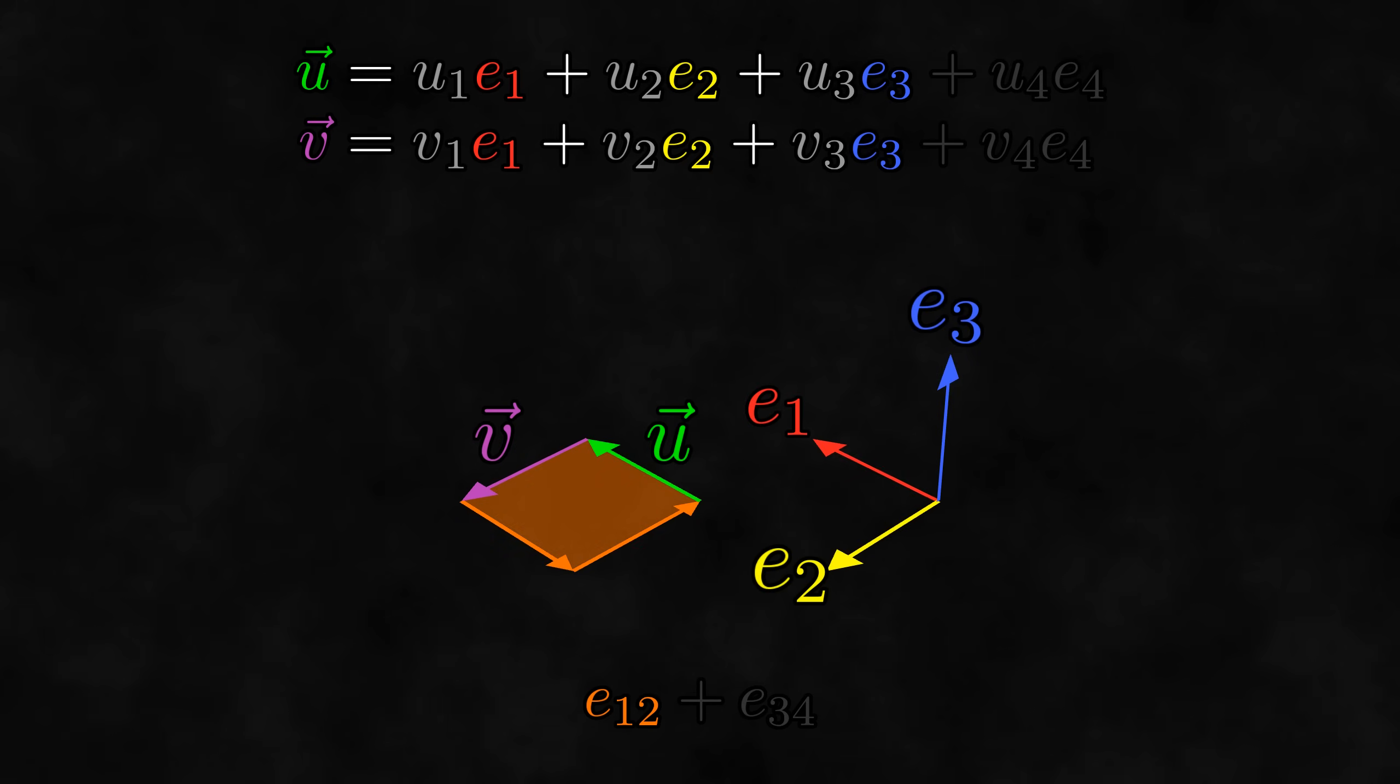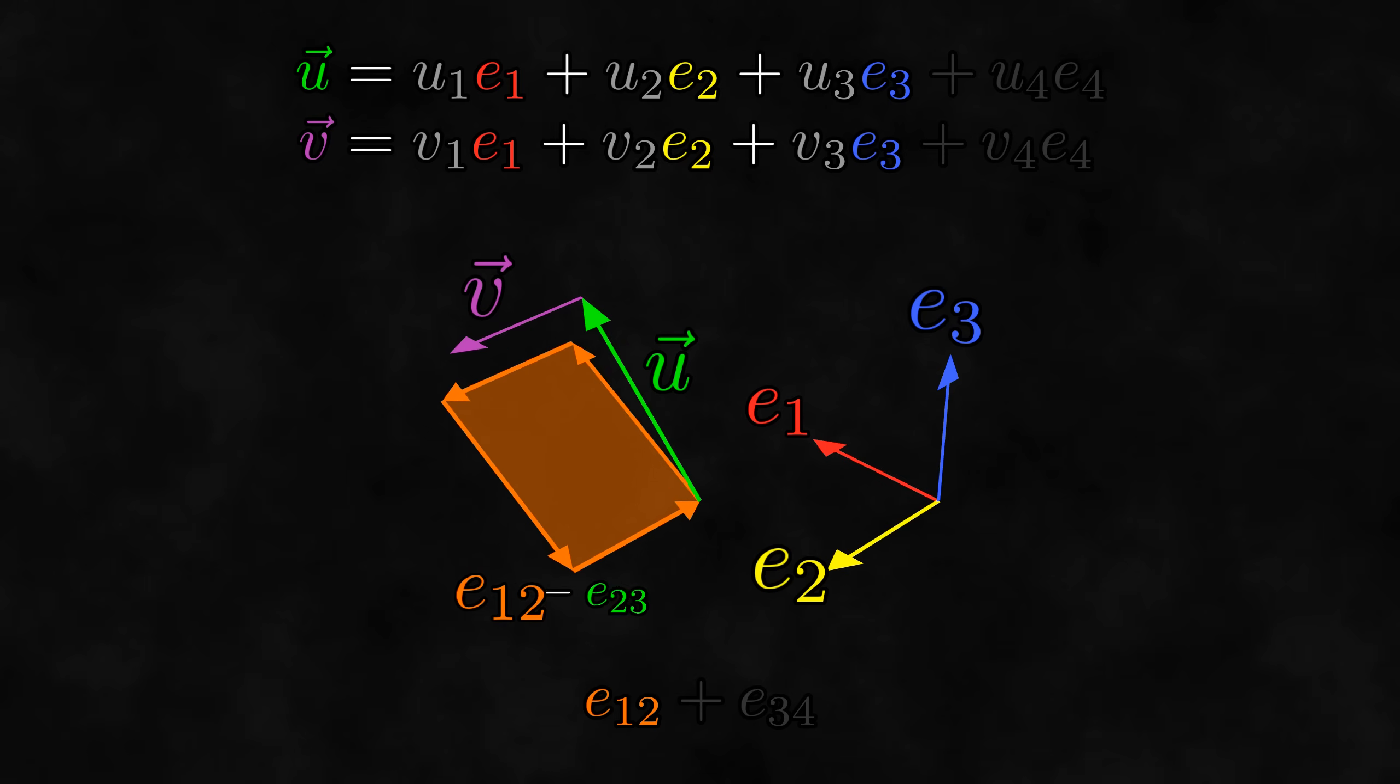In this view, the bivector is just E12 and doesn't go in the E3 direction at all. If either of the vectors went in the E3 direction, this would cause the bivector to go in the E3 direction as well, which we know is impossible.